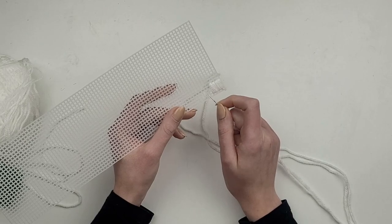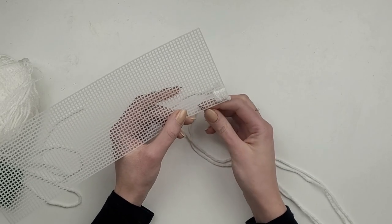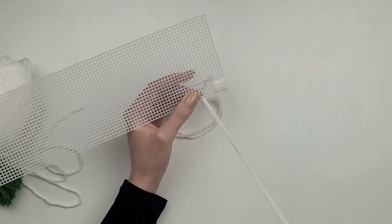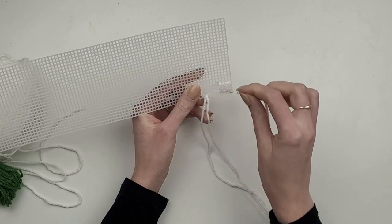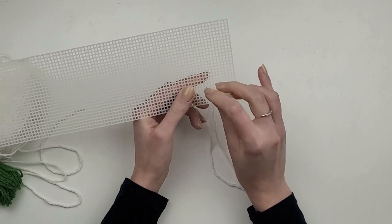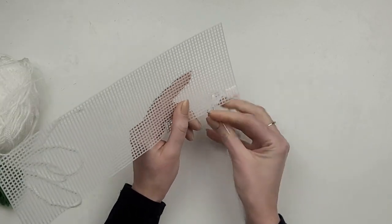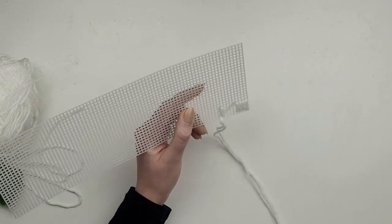Once the first square is done I'm jumping over four squares to the left and start making another square. I think this is the quickest and tidiest way of doing it. You don't have to change the yarn after each square and you don't make unnecessary knots at the back.